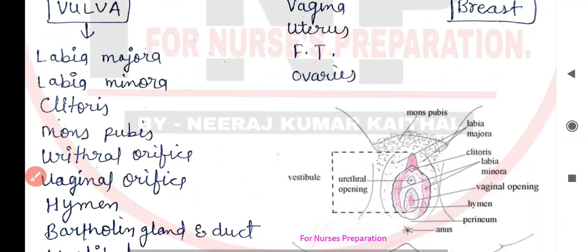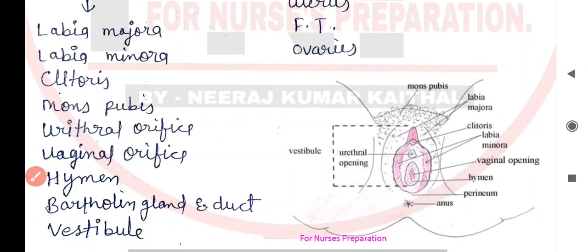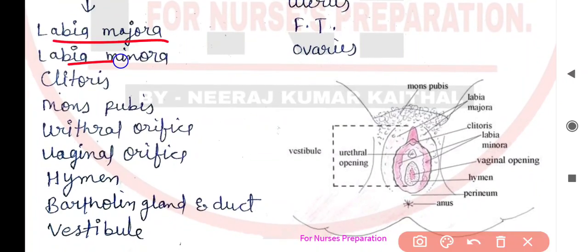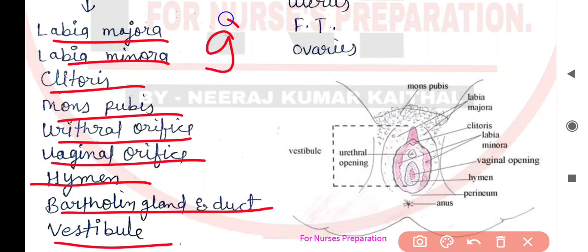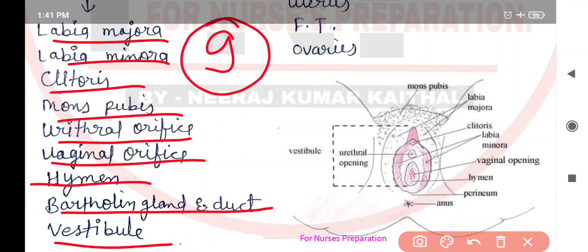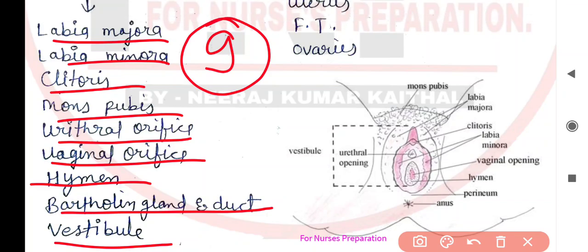Vulva ke andar labia majora, labia minora, clitoris, mons pubis, urethral orifice, vaginal orifice, hymen, bartholin gland and duct, aur vestibule ko include kiya jaata hai. Total yaad rakhne ke hisaab se aap maan lijiye nine structures hain jo external female reproductive organ ke antargat include ki jaati hain, jinhe sammilित roop se vulva ke naam se jaante hain.